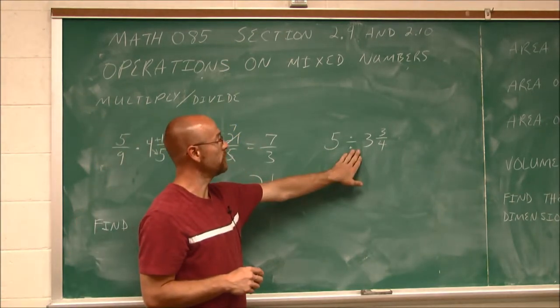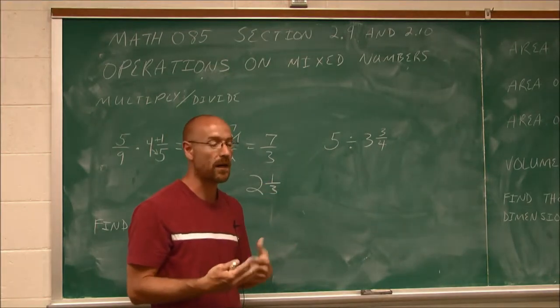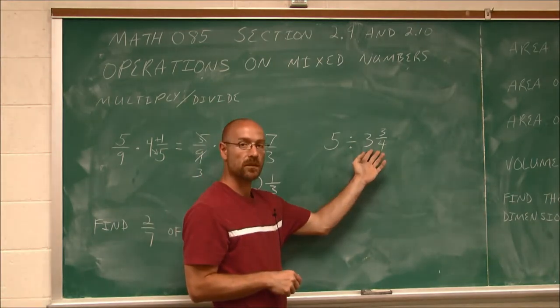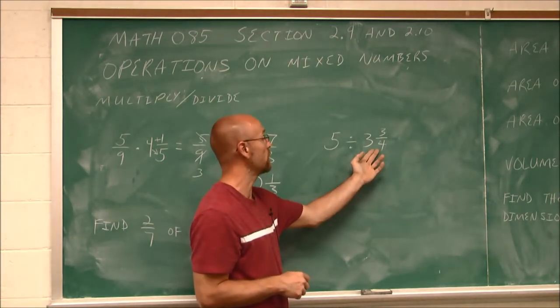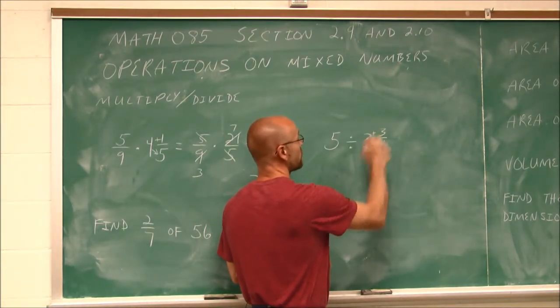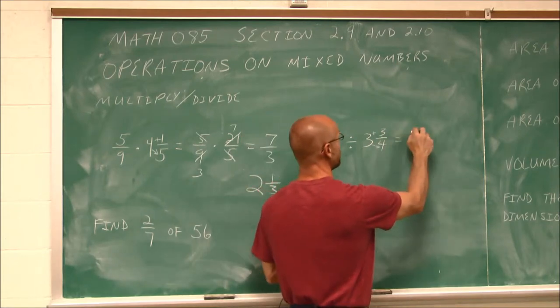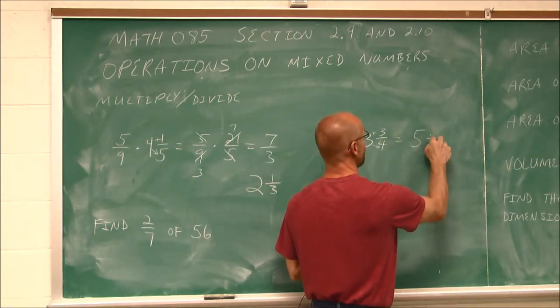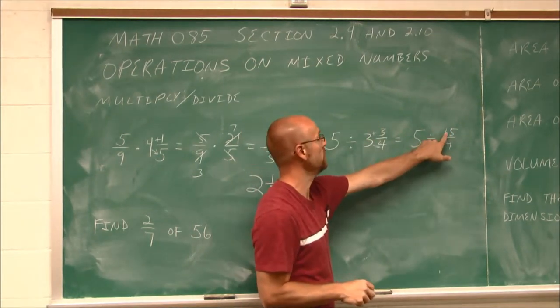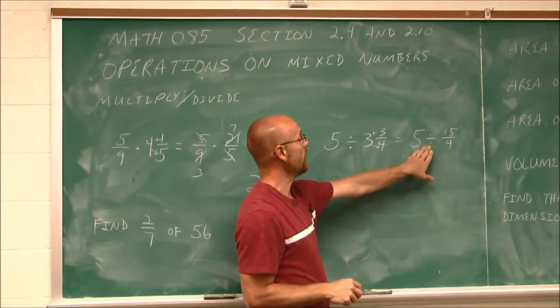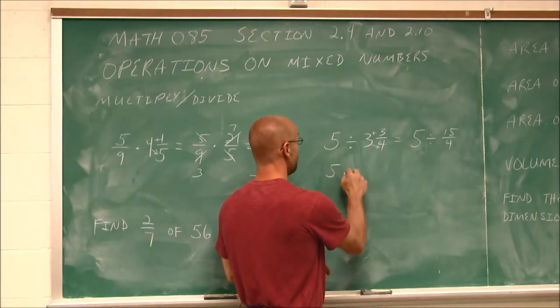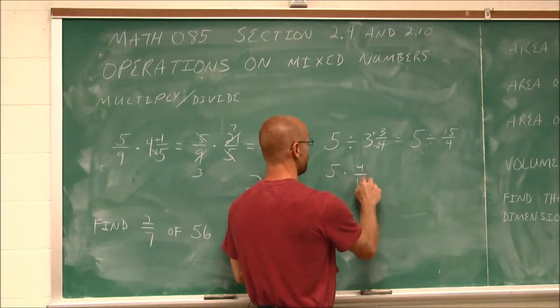When we look at division, if we recall, in order to divide by a fraction, we have to multiply by its reciprocal. Well, to find the reciprocal of this, we have to write it as a mixed number. So I'm going to do that. 3 times 4 is 12, plus 3 is 15. So when I rewrite this, I get 5 divided by 15/4. 3 times 4 is 12, and 3 is 15 over 4. Now that it's division by a fraction, we multiply by its reciprocal, 5 times 4/15.